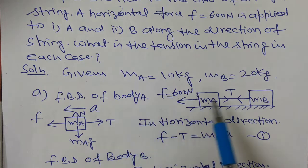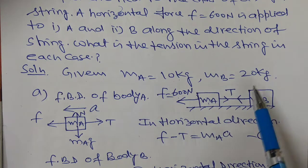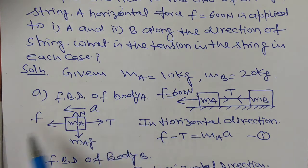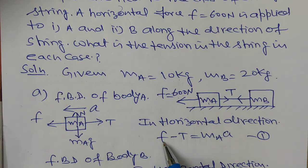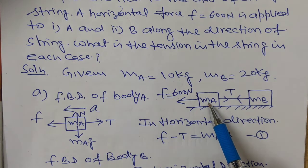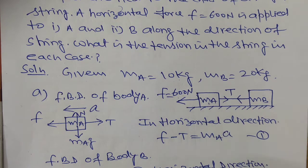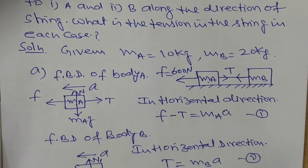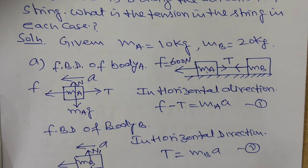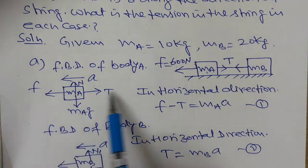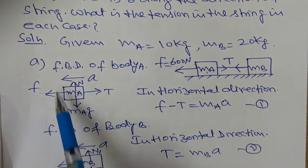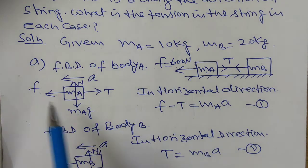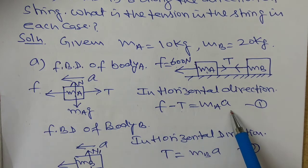So on body A, first this force of 600 N acts, and this tension in the string — this tension T tries to pull the block backward. This tension T, the weight of the body vertically downward Mg, and the normal reaction N from the surface acts on the body. The total system has force acting in this direction, therefore the acceleration of the system is in the direction of force.